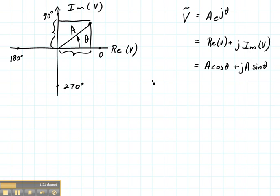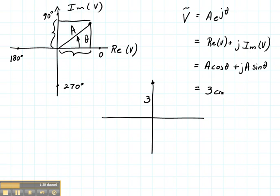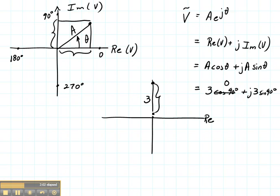Let's see what some special cases would be. Suppose I have a voltage at 90 degrees with a magnitude of 3 volts. I want to express this as 3 times the cosine of 90 degrees plus J times 3 times the sine of 90 degrees. The real part is zero because the cosine of 90 degrees is zero, and the imaginary part is 3 because the sine of 90 degrees is 1. So this voltage is J times 3.